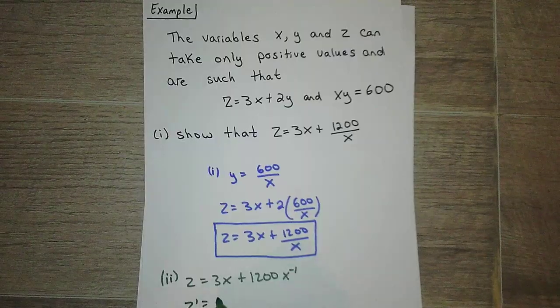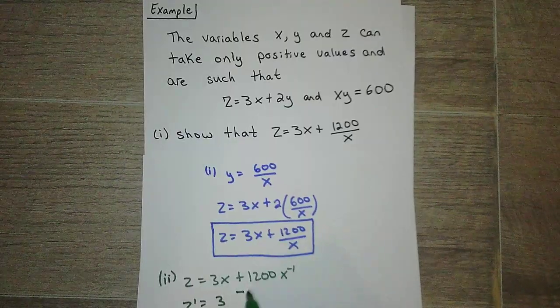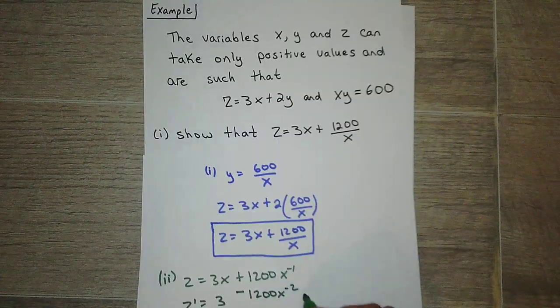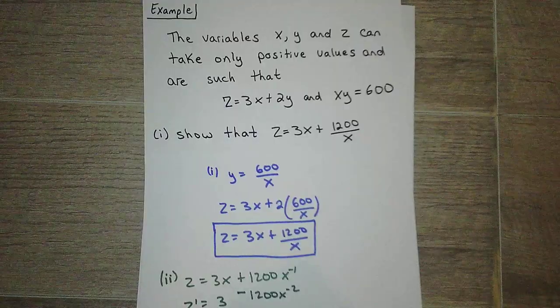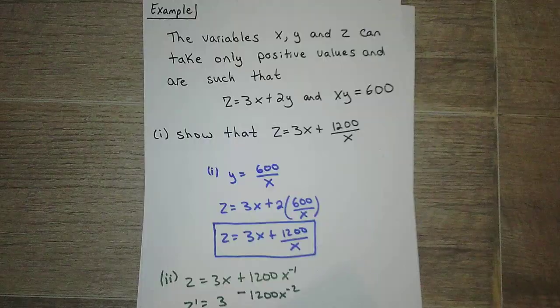And so z prime is: derivative of 3x is just 3, bring down the negative 1, and then subtract 1. So z prime is 3 minus 1200 over x squared.